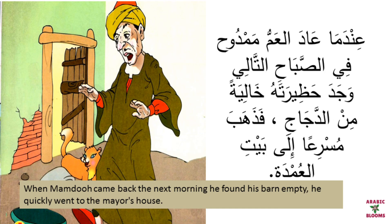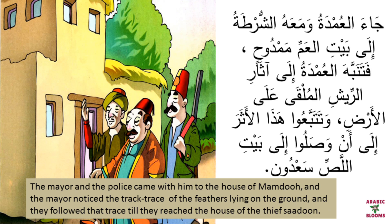فقالت الأخرى عندي فكرة علينا أن ننزع ريشنا بمنقارنا إلى أن نصل إلى بيت اللص لكي نترك أثرا على الأرض. The other said: I have an idea — we must pluck our feathers with our beaks as we go to the thief's house, to leave a trail on the ground. عندما عاد العم ممدوح في الصباح التالي وجد حظيرته خالية من الدجاج فذهب مسرعا إلى بيت العمدة. When Uncle Mamdouh returned the next morning, he found his barn empty of chickens and went quickly to the mayor's house.